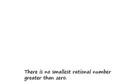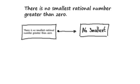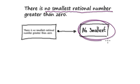Let me give you guys another example of proof by contradiction. Let's say we're trying to prove that there is no smallest rational number greater than zero. So here we're saying that we've got no smallest rational number.